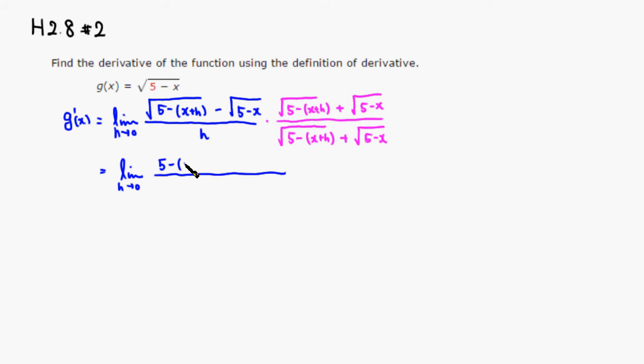So 5 minus x plus h minus square of that would be 5 minus x. And on the bottom, I just have to copy all those guys. So you have 5 minus x plus h plus square root of 5 minus x.